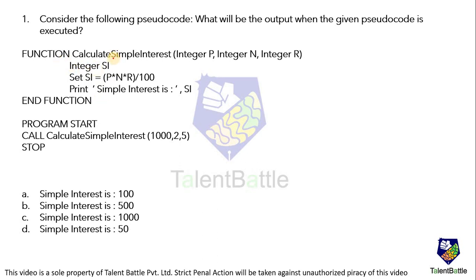In this pseudo code a function called calculate_simple_interest is defined, accepting three integer parameters: integer p, integer n, and integer r. In the function body, an integer variable si is declared and computed with the formula p multiplied by n multiplied by r divided by 100. The result is assigned to si and printed with the message 'Simple Interest is [si]'. The program then calls that function with the three parameters 1000, 2, and 5.